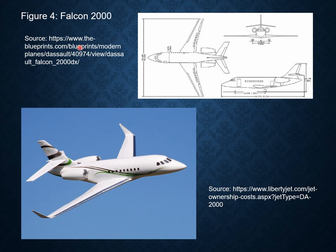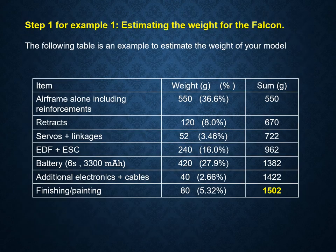This is the model we want to build: the Falcon 2000, which has two engines, so we need two EDFs. For example 1, I have to estimate the weight for the Falcon. I use this table. If you don't know certain values, you can use the provided percentages.